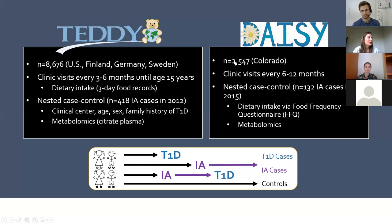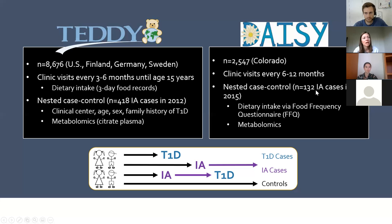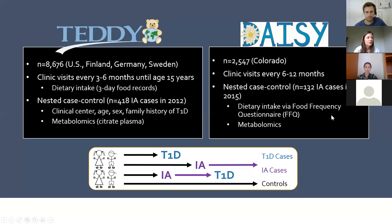DAISY had a similar study design — roughly 2,500 children recruited at birth and followed prospectively with clinic visits every 6 to 12 months. We conducted a nested case-control study with 132 IA cases available in 2015, with matched controls. Instead of food records, DAISY collects dietary intake by food frequency questionnaire, which has different implications for which parts of the diet are captured well. Metabolomics was conducted from non-fasting serum.